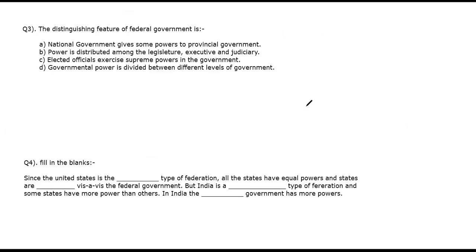The third question is about the distinguishing feature of federal government — it is an MCQ type question. First option: national government gives more power to the provincial government. Second option: power is distributed among the legislature, executive, and judiciary. Third option: elected officials have supreme powers in the government. Fourth option: governmental powers are divided between different levels of the government. The fourth answer is correct.